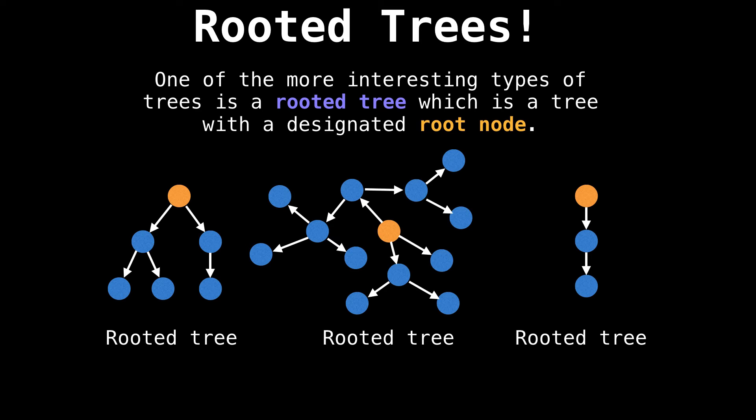Generally speaking, rooted trees are far easier to work with than undirected trees because of their well-defined structure, which allows for easy recursive algorithm implementations.